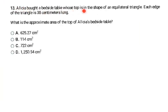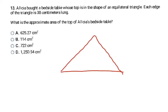Alyssa bought a bedside table whose top is an equilateral triangle. Each edge is 38 centimeters long. What is the approximate area? I'll draw a triangle with equal sides, labeling all three sides 38. To find area, I need base and height. The base is 38, but I don't know the height. I'll draw in the height and calculate it using the Pythagorean theorem, because that half of the triangle is a right triangle.